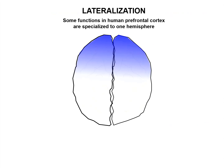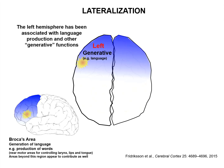Interestingly in humans, some functions of prefrontal cortex are specialized to one hemisphere. For right-handed individuals, the left hemisphere has been associated with language production and other generative functions. For example, Broca's area is very important for the production of language, and it is close to the motor strip that physically controls our larynx, lips, and tongue. Areas beyond this region also contribute to language, but Broca's area is a major focus.